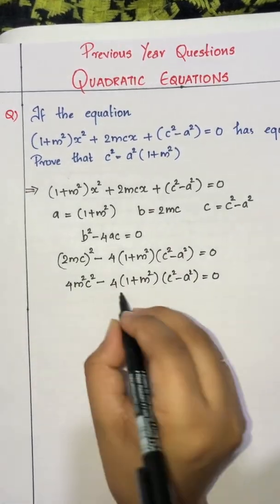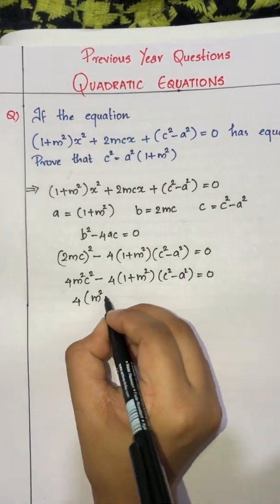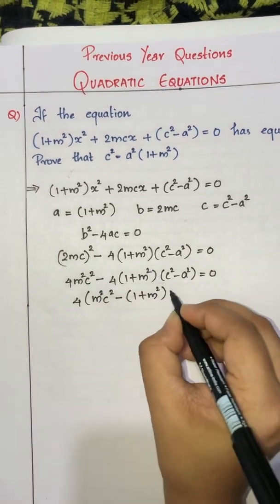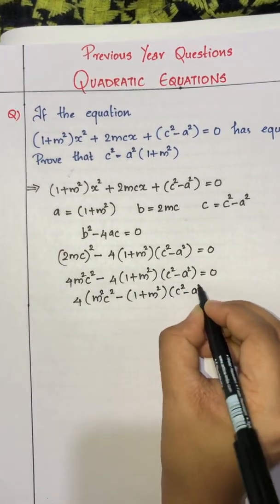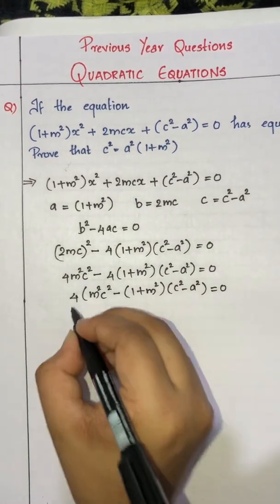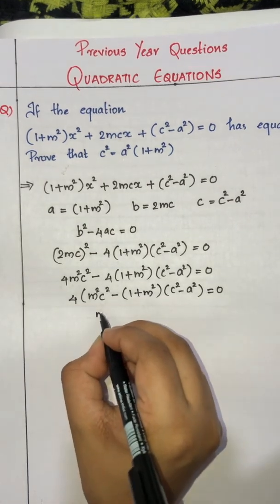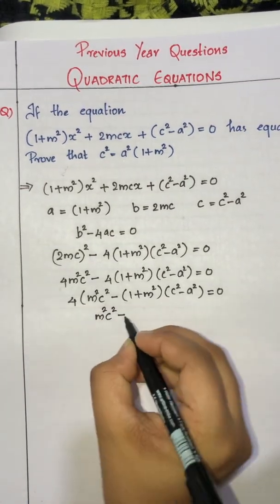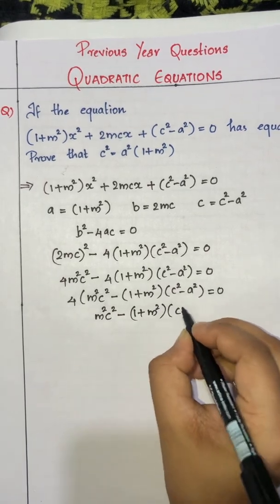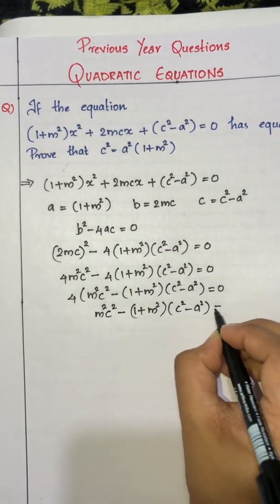4 is common, so dividing both sides by 4: m²c² - (1 + m²)(c² - a²) = 0.